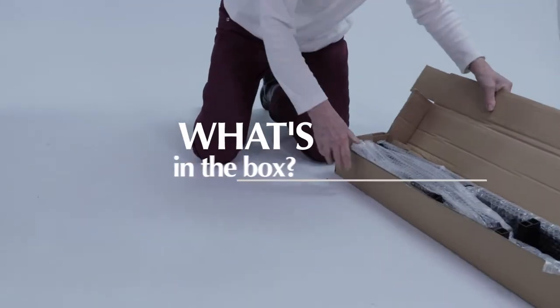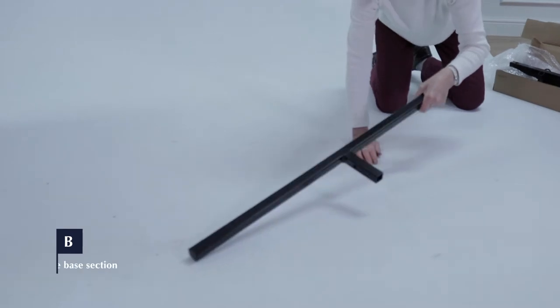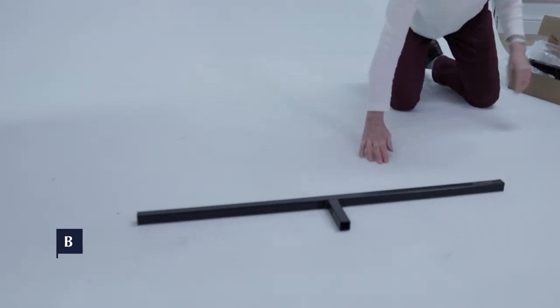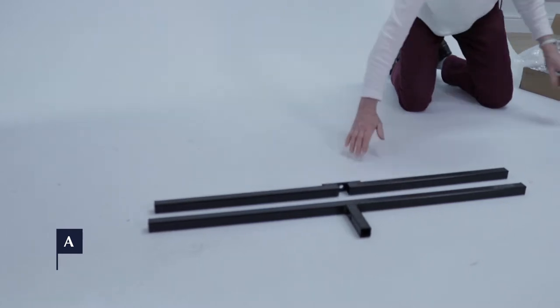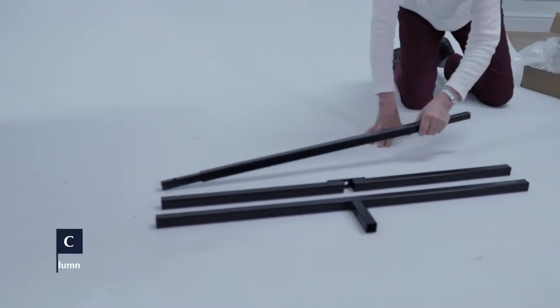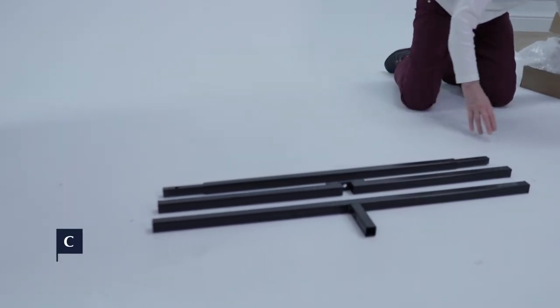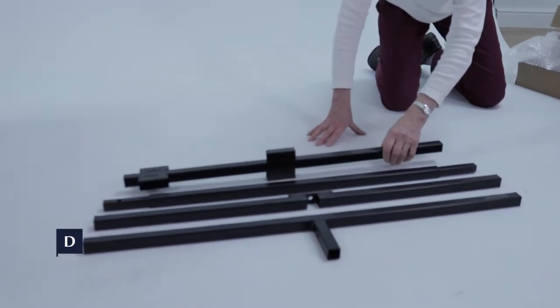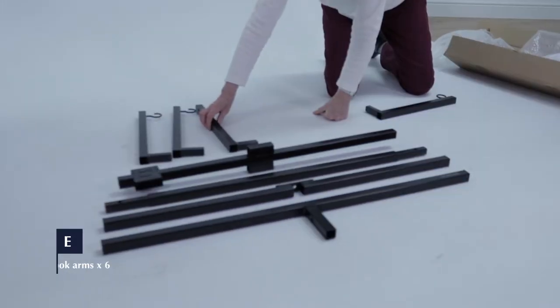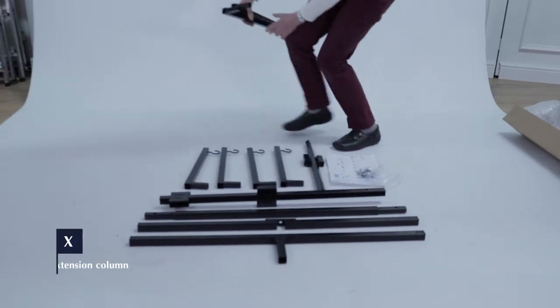So let's see what's in the box. First up, we have the female and male base sections A and B. Next, lower column C, followed by upper column D. Six fork arms E and extension column X.